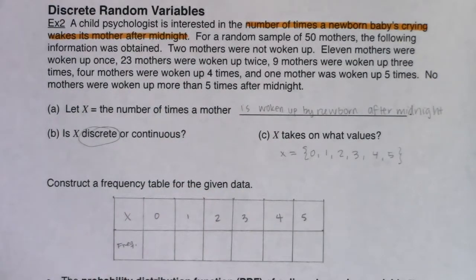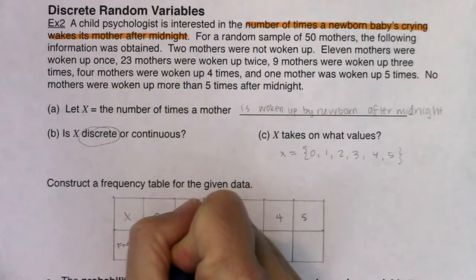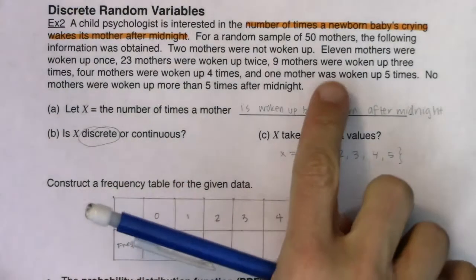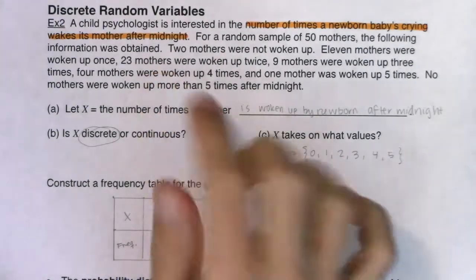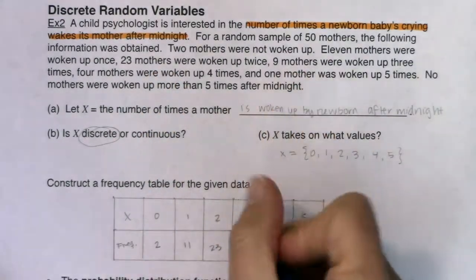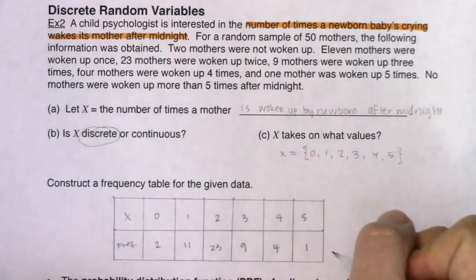In the bottom, we're going to put the frequencies. I want the frequencies, and I'm going to find those in the wordings of my problem. Two mothers were not woken up, so there's a frequency count of two here. Eleven mothers were woken up once, twenty-three mothers were woken up twice, nine mothers three times, four mothers four times, and one mom here.